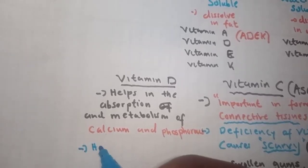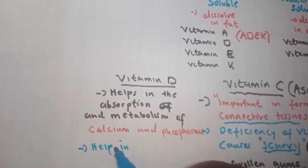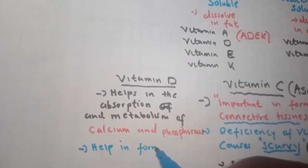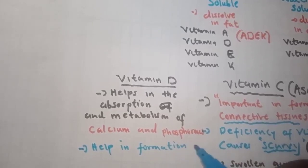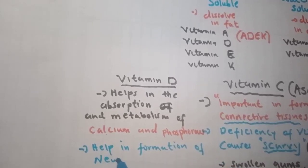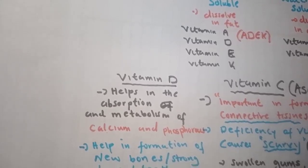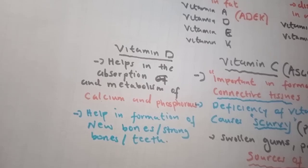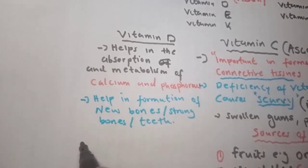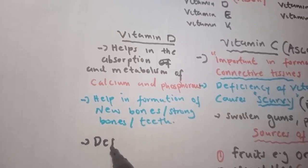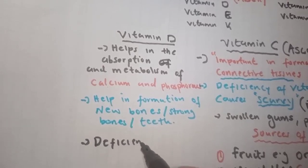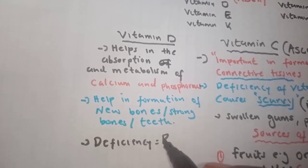Calcium and phosphorus help in the formation of strong bones and teeth. Deficiency of vitamin D leads to a disease called rickets, which is characterized by weak bones.